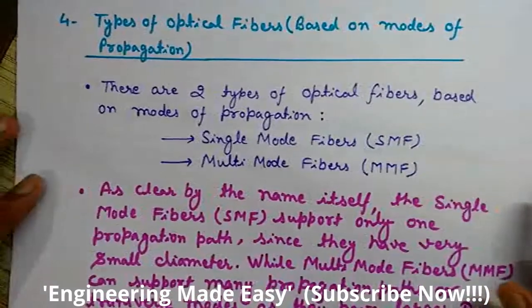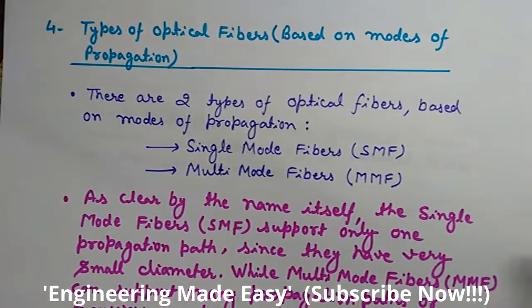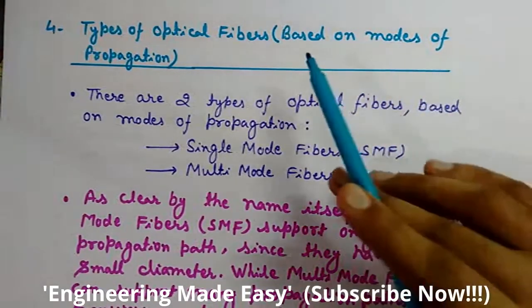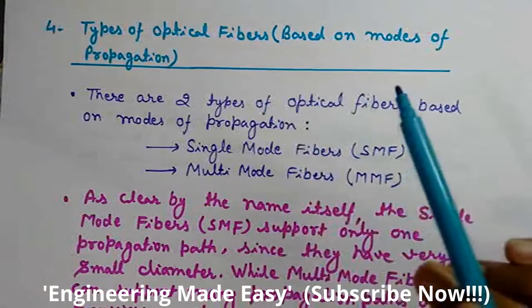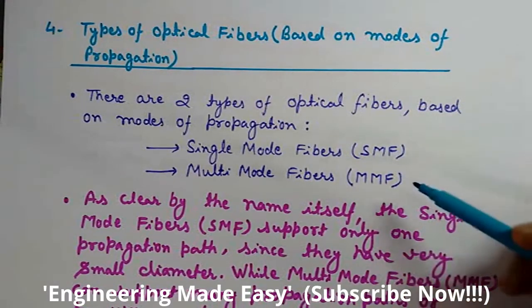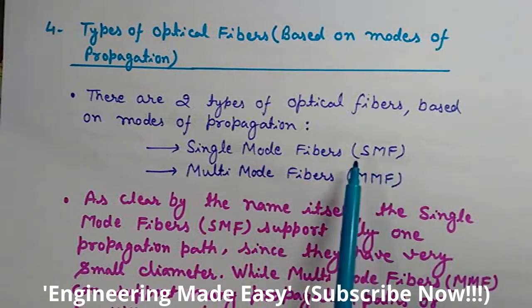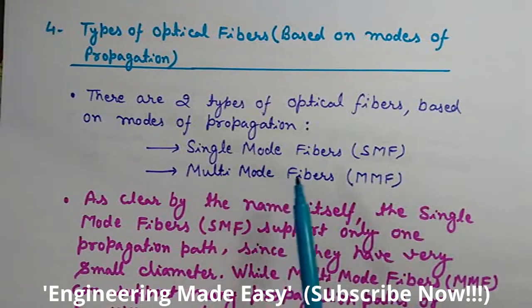Let's discuss various types of optical fibers based on the modes of propagation. There are two types of fibers based on the modes: single mode fibers (SMF) and multimode fibers (MMF).